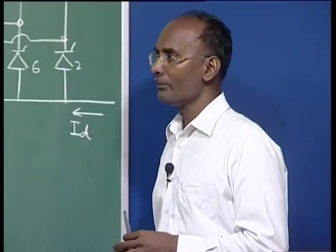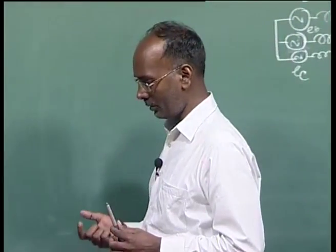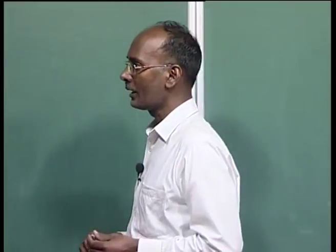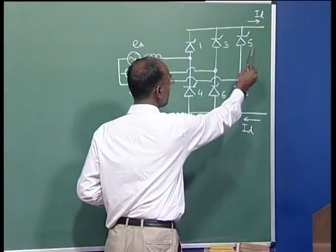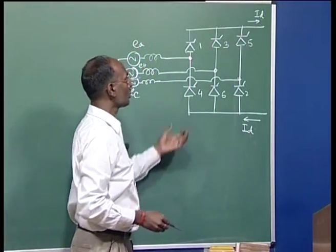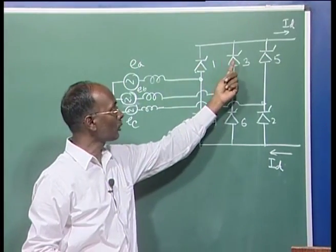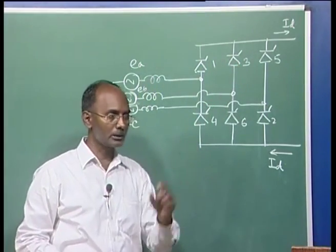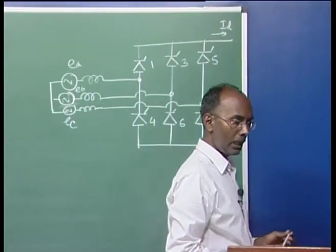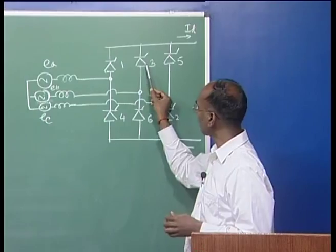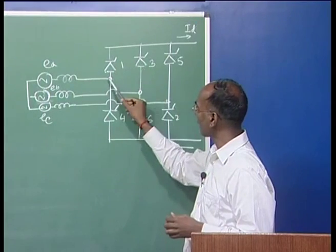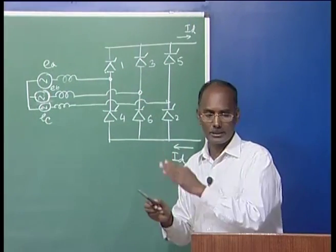Today we discuss when the overlap angle is zero. The overlap angle is defined as the duration when the current is shared by two valves in the same commutation group. There are two commutation groups: upper and lower. When valve current shifts from one to three, that duration is the overlap angle. Here we assume overlap angle is zero, meaning the current shifts instantaneously when the firing pulse is received.